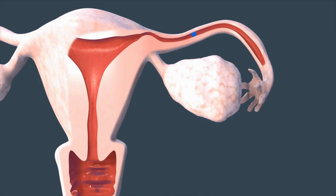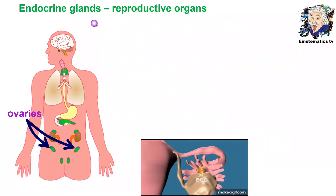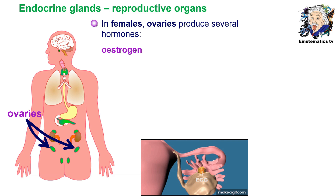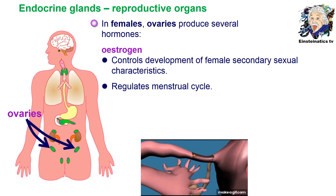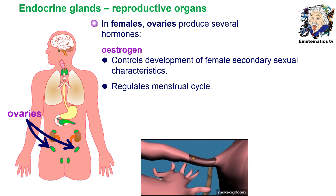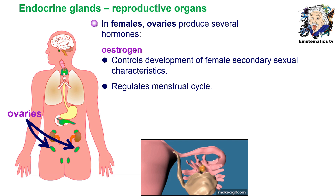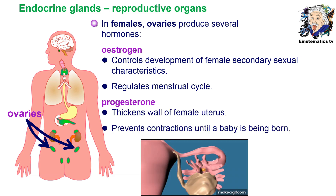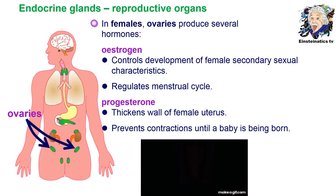The female sex gland, the ovary, produces several types of hormones. These include estrogen, whose function is to control the development of female secondary sexual characteristics such as widening of the hips, voice changes, and enlargement of the breasts. It also regulates the menstrual cycle. Progesterone, on the other hand, thickens the wall of the female uterus and prevents contractions until a baby is born.